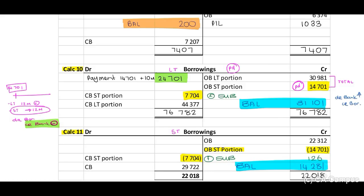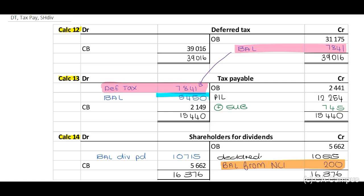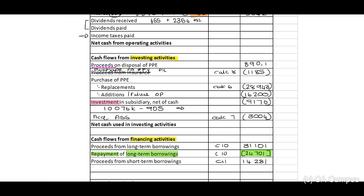We have balanced all T-accounts. Next — deferred tax: we balance on the credit side and transfer to tax payable: 7,841. If we credit deferred tax, we debit tax payable and the balancing figure is 5,450. This is a creditor — debit payable, credit bank — an outflow. We pay 5,450. Therefore on the face: income taxes paid (5,450) in brackets.